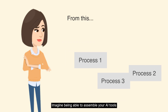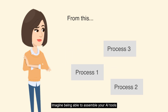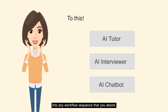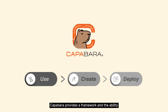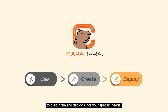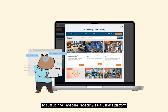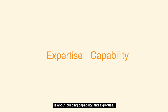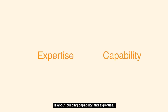Imagine being able to assemble your AI tools into any workflow sequence that you desire. Capybara provides a framework and the ability to assemble multiple tools and media to build, train, and deploy AI for your specific needs. To sum up, the Capybara capability-as-a-service platform is about building capability and expertise.